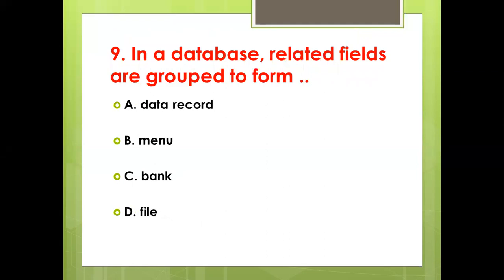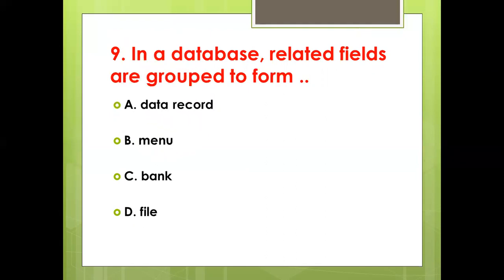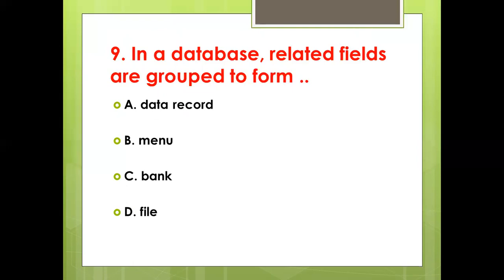Ninth bit: In a database, related fields are grouped to form a dash — Option A: Data Record. Option B: Menu. Option C: Blank. Option D: File. Answer: Option A, Data Record.